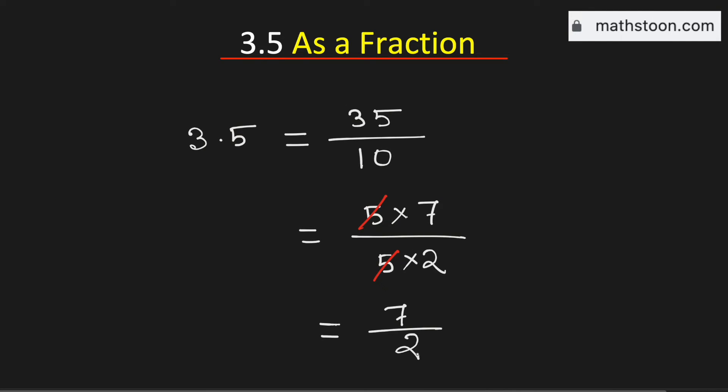As both 2 and 7 are prime numbers, this fraction cannot be simplified further. So 3.5 as a fraction is the same as 7 over 2, and this is our final answer. Thank you for watching.